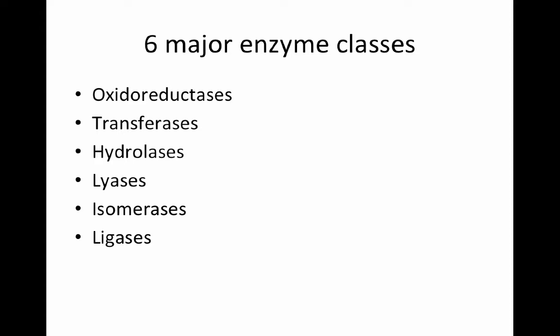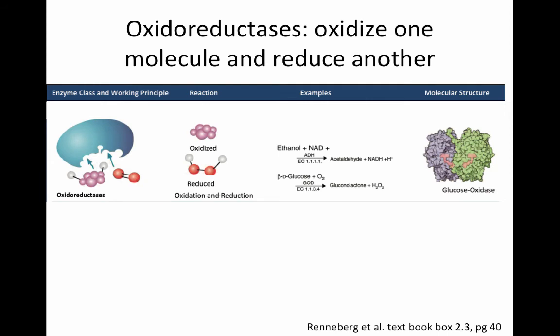The six enzyme classes are: oxidoreductases, transferases, hydrolases, lyases, isomerases, and ligases. For each one we'll look at the substrates, the products, and a little bit of their functioning. First are oxidoreductases.